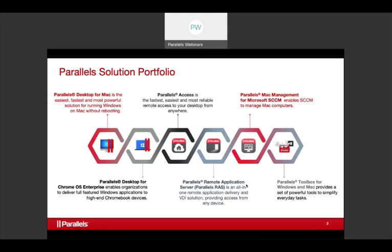For the enterprise, we have Parallels Remote Application Server, or RAS — a VDI and SaaS solution. If this sounds like Citrix, it kind of is, except you don't pay the Citrix tax. Everything is built in — load balancing and all the major architecture — nothing is à la carte. It really took off during the pandemic, and a lot of customers added more seats looking for remote environments. If you're looking for ways to deliver apps to any form factor, that's what Parallels RAS does.